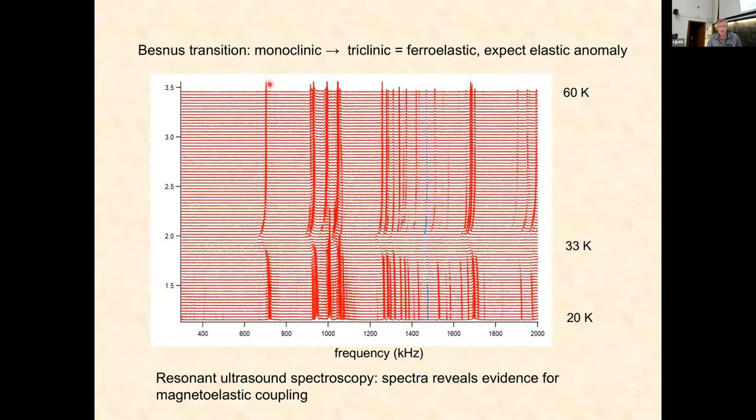Here is a crystal of Fe7S8 at resonant frequency at 60 kelvin. As we cool down we see a distinct anomaly in frequency and a distinct anomaly in the width of these peaks. So we've got a significant elastic anomaly associated with the Besnus transition, but it's very small, this is a tiny effect. So the high-temperature transition in pyrrhotite is very strongly coupled with strain, and the Besnus transition is very weakly magnetoelastic.